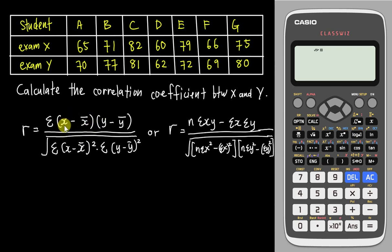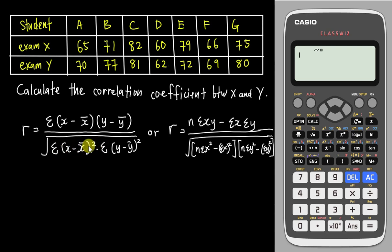The first formula uses X minus the mean, which you can get from the calculator. You multiply that by Y minus the mean of Y, then sum all of them together. For the denominator, you use X minus the mean of X, square it, and sum all of them. Then do the same thing for Y, square it, and sum. But here I will just focus on the second formula.